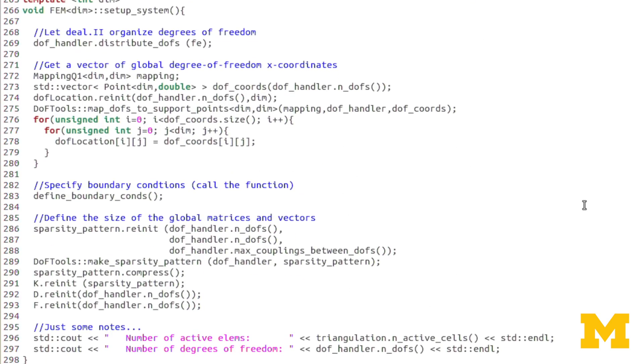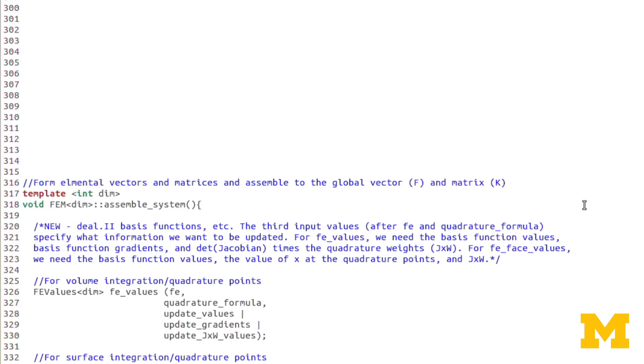Let's quickly look at setup system. There's no difference here other than the fact that we're creating DOF location as a table rather than node location, but nothing you have to change. We'll stop the segment here, and in the next segment we'll look at assemble system, which will be the meat of this template.